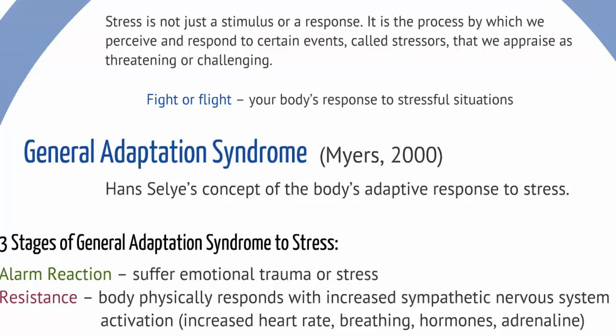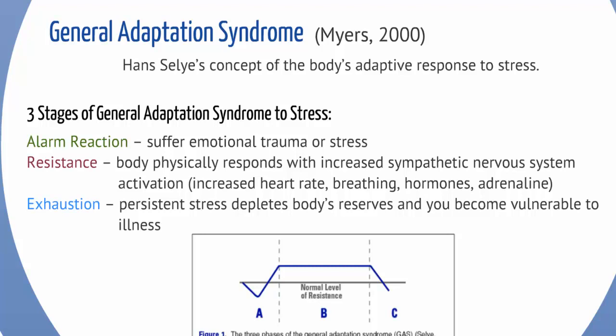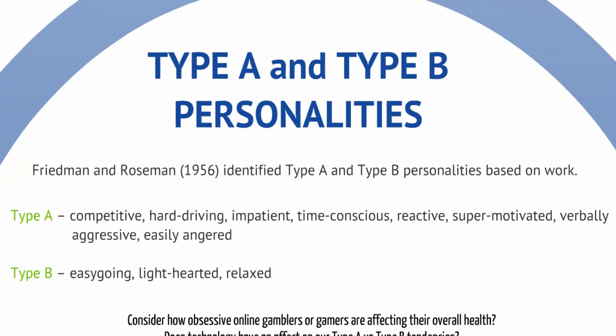Selye developed what he called the General Adaptation Syndrome — his concept of the body's adaptive response to stress. The three stages are as follows: first, the alarm reaction, where we suffer a trauma or stressful incident. Then resistance, where our body physically responds — because it thinks we're in fight-or-flight, we have increased sympathetic nervous system activation, so heart rate and breathing rate go up. And finally, after a time, we reach the exhaustion point, where persistent stress depletes the body's reserves, making you vulnerable to illness. This is why chronic stress has a really negative impact on our health.